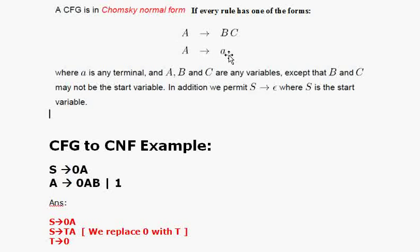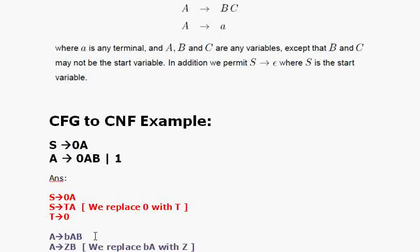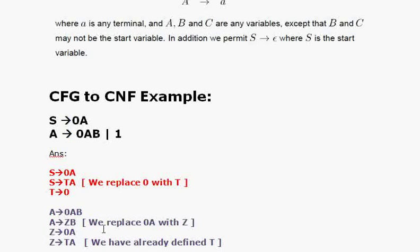For the second rule, A → 0AB, we introduce a new non-terminal Z to replace the substring 0A. So we write A → ZB, where Z → 0A. Since we already defined T → 0, we can substitute T for 0 inside Z's rule, giving us Z → TA.